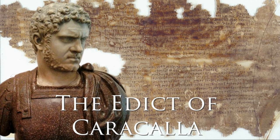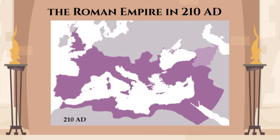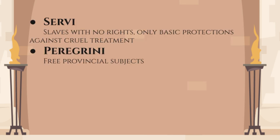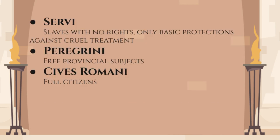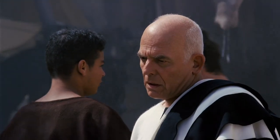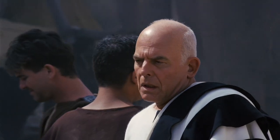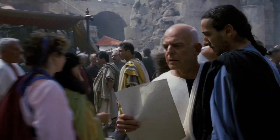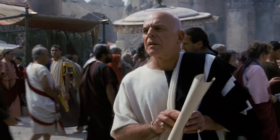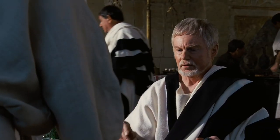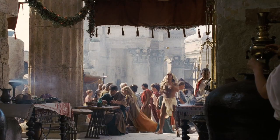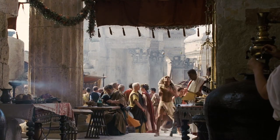By the start of the 3rd century, Rome was a huge multi-ethnic empire. Its population was divided into three major classes: the slaves, the free provincial subjects or Peregrini, and the citizens. The primary indicator of citizenship was a Roman name. As we saw in the previous video, different social classes used it differently, but they all understood its significance.